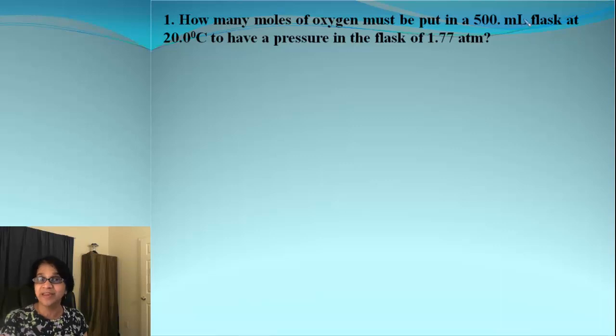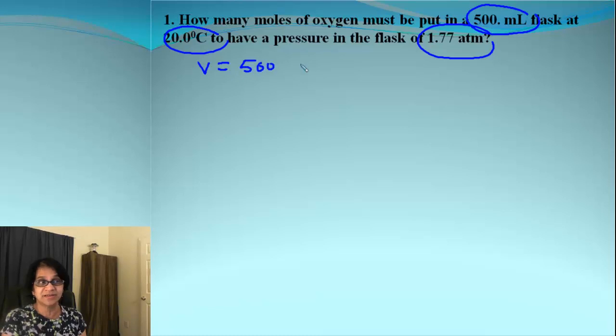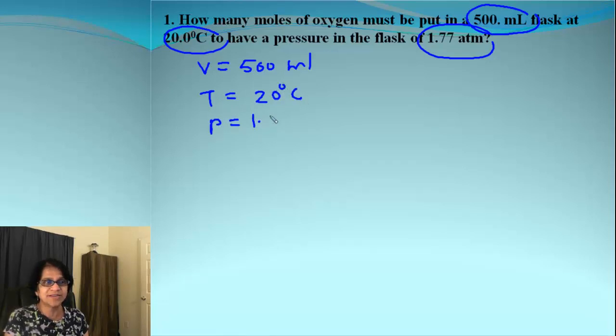And we always begin with given. So that's volume. That's temperature. And that is obviously pressure. So volume is 500 milliliters. Temperature is 20 degrees Celsius. And pressure is 1.77 atmosphere.